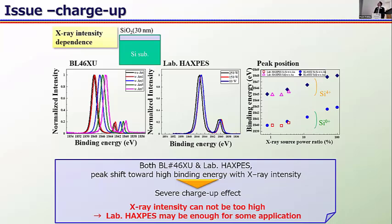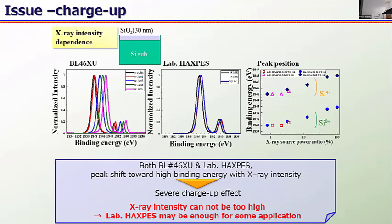There is another issue: charging. Once again, using a very simple and important sample — surface-oxidized silicon — if you increase the X-ray power, both for lab HAXPES and synchrotron HAXPES, you can find a shift of the peak caused by charging. Of course, we use a neutralizer to compensate for charging. But you have to be careful to keep the measurement non-destructive. Even with the very strong beam of synchrotron, we have to reduce the X-ray intensity to avoid charging. So in this particular case, lab HAXPES is really good for our purpose. You can use both synchrotron and lab HAXPES, just case by case.